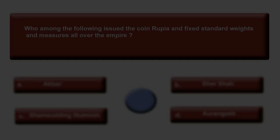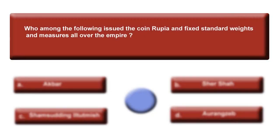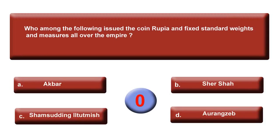Your first question: Who among the following issued the coin Rupiah and fixed standard weights and measures all over the empire? Your options and time for this question starts now.